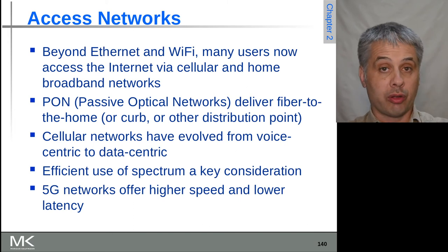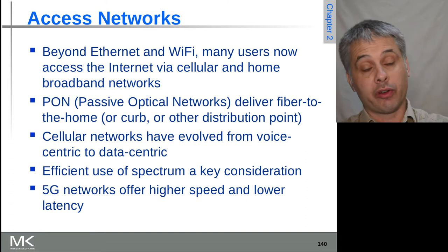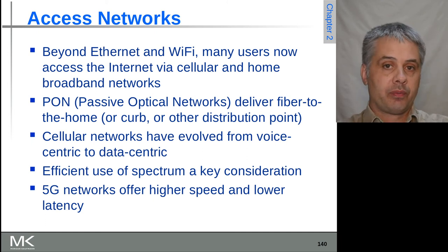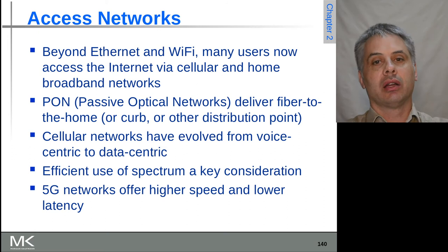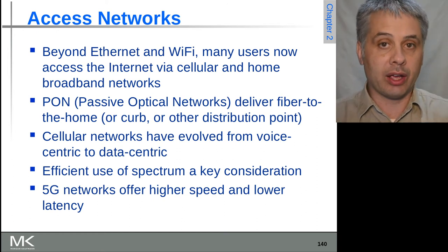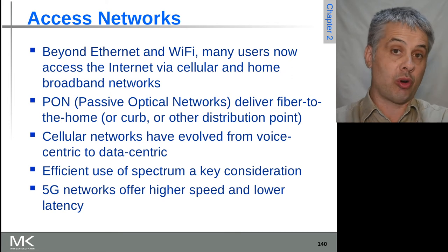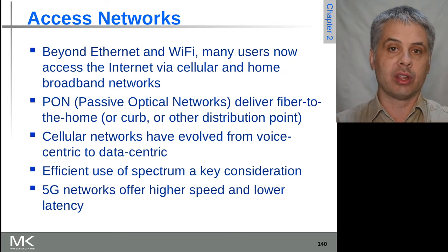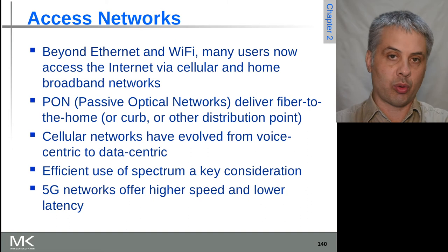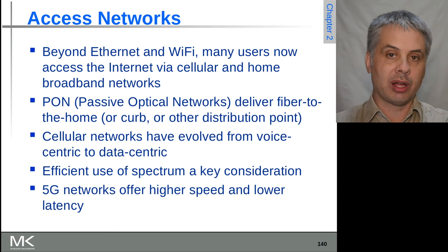2G networks were the first digital cellular networks — 'G' refers to generation, so 2G was the second generation. First-generation networks were purely analog, effectively a two-way radio system with cell tower support to relay communications and connect to the wider phone network. Voice calls went as analog audio over the air, meaning anyone could listen in — which caused embarrassment at various points in the 80s and 90s. Then we moved to 2G digital networks.